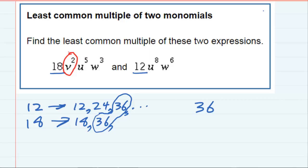For the u's, there's a u⁵ and a u⁸, so getting the one with the highest power would be the u⁸. And then for the w's, w⁶, the highest power is w⁶.